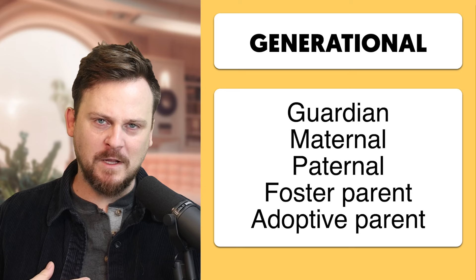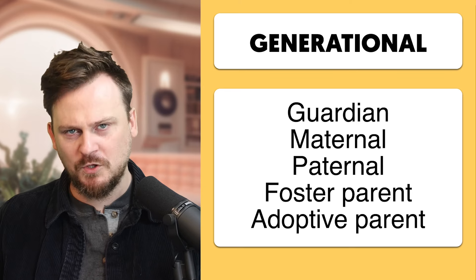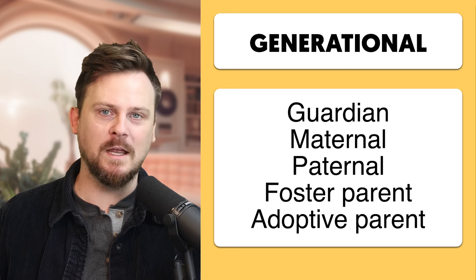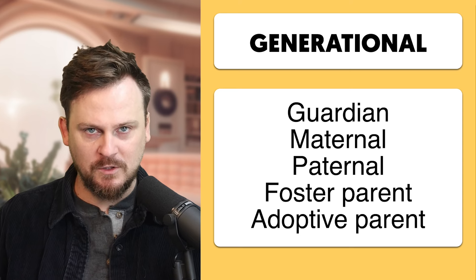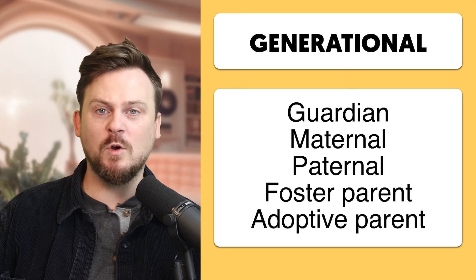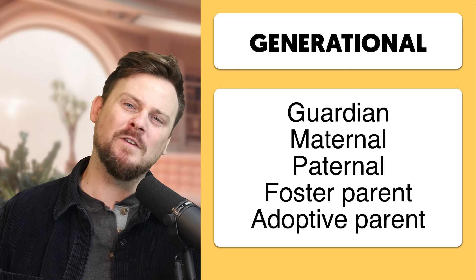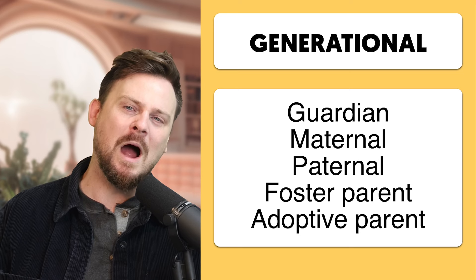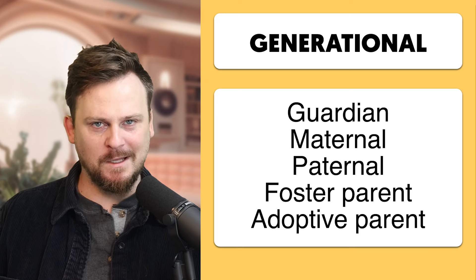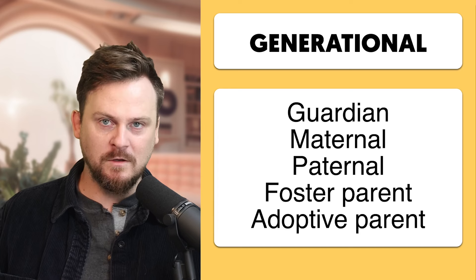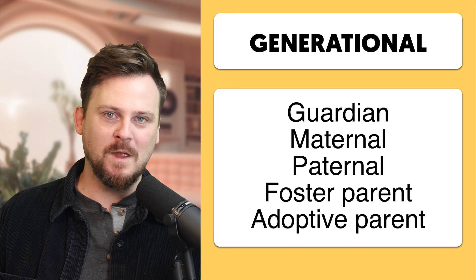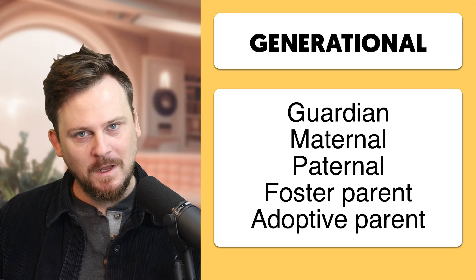Let's talk about generational terms. A generation is simply a level in a family: grandparents, parents, children — three generations, three levels. You might say 'a family tradition that goes back ten generations.' In English, going further back is easy — all you have to do is add the word 'great.' Your grandmother's mother is your great-grandmother.